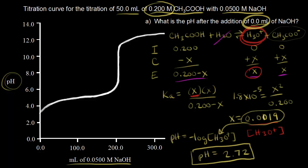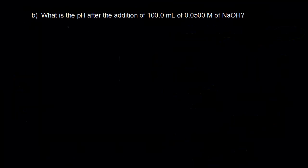Looking at the titration curve, at 0.0 mLs of base the pH is 2.72 — this is point A on the curve. Next, in part B, we want to find the pH after adding 100.0 mLs of our 0.0500 molar sodium hydroxide solution.